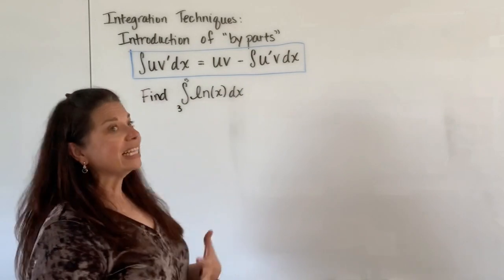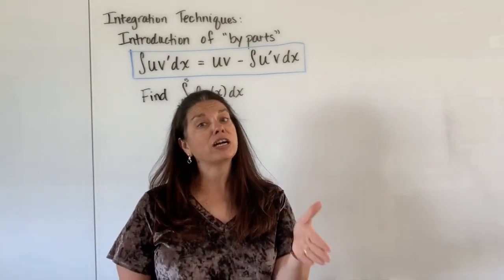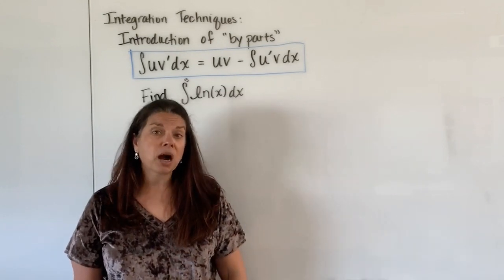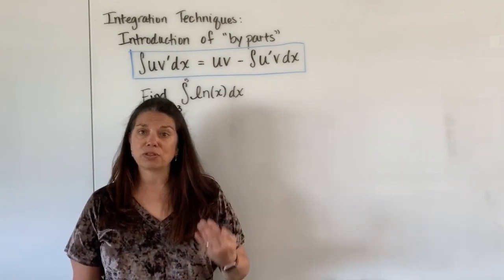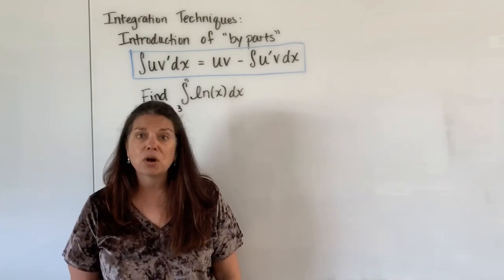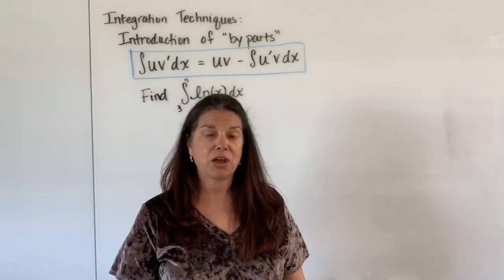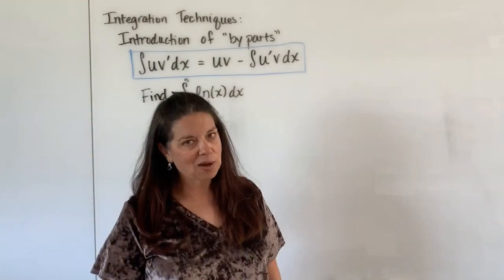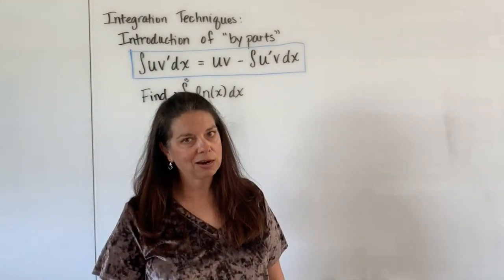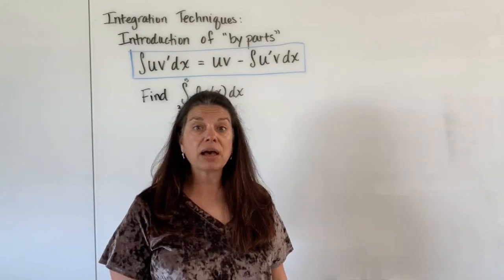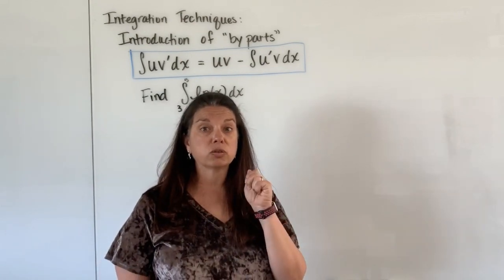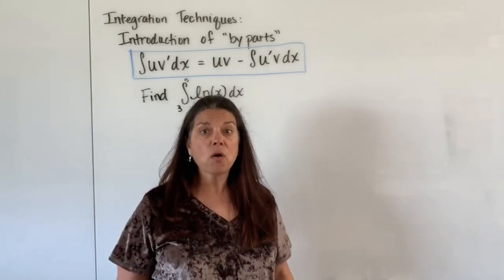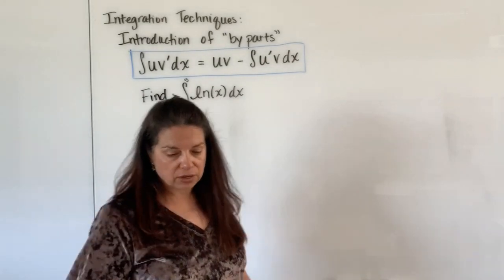Well normally in the last examples we had two functions that were being multiplied together and that's what generated our parts. So we had to figure out what the u was and what the v prime was and all that good stuff. So here what we actually want to do is imagine, well I think I do have another function hanging out there. It's just a one.